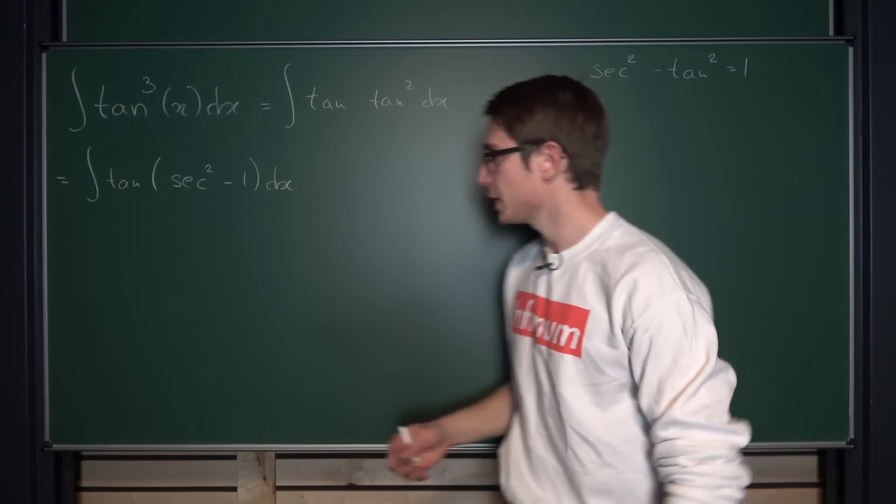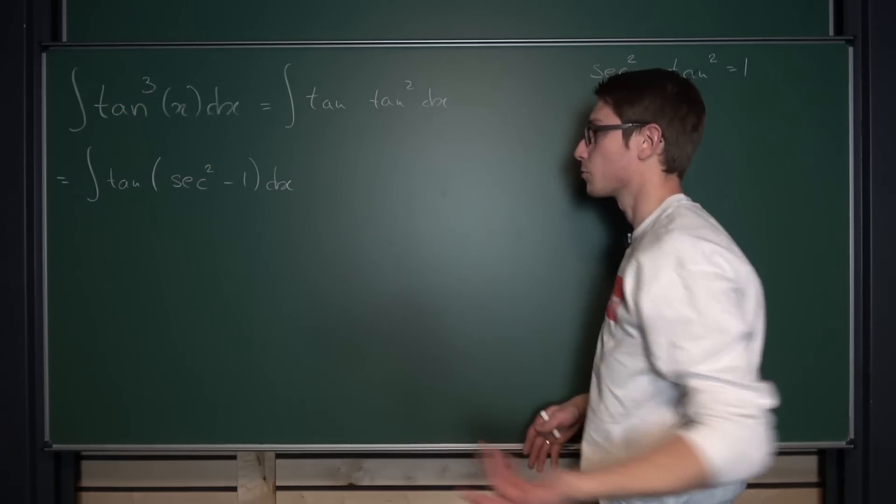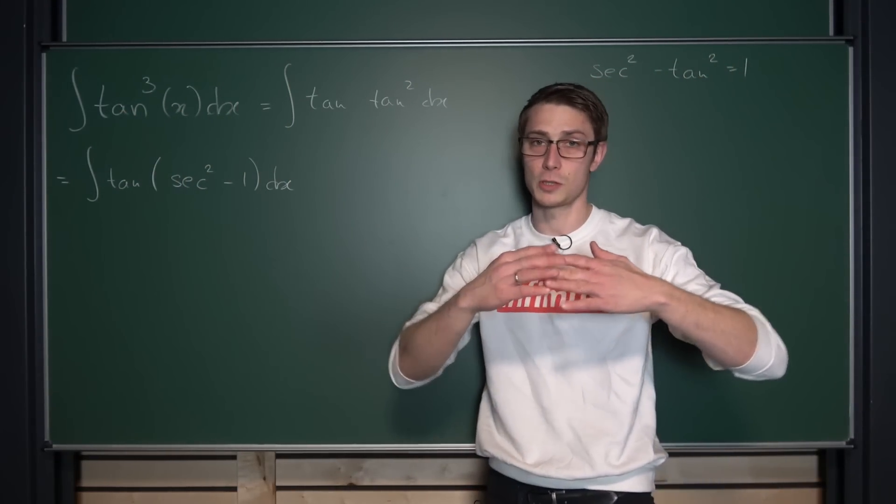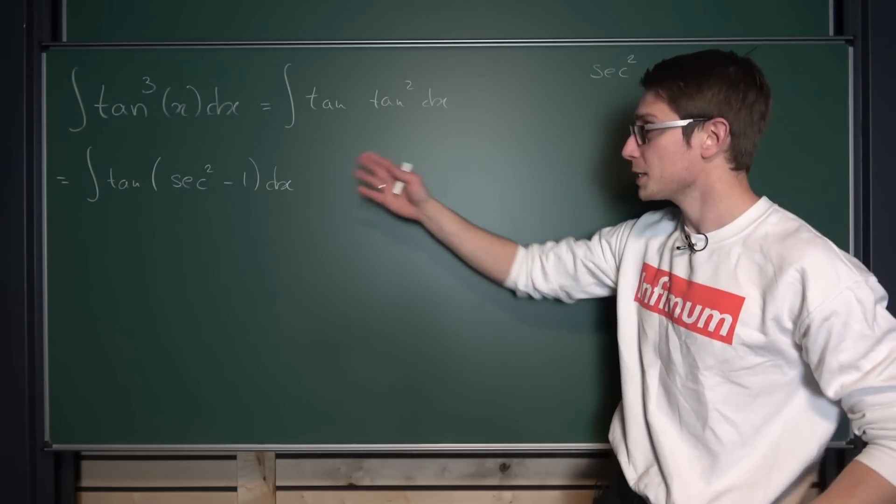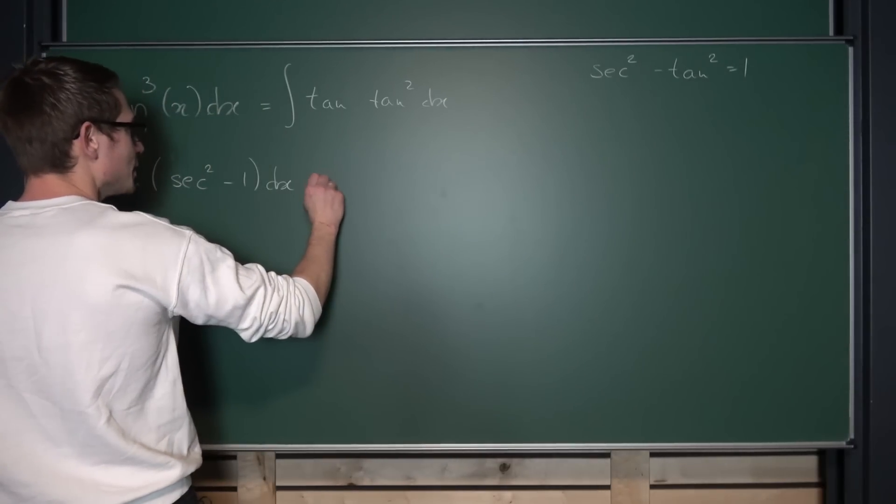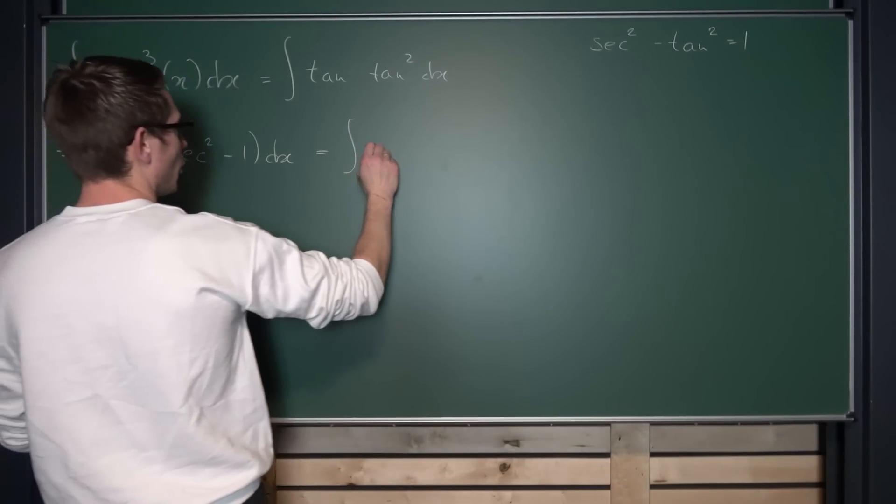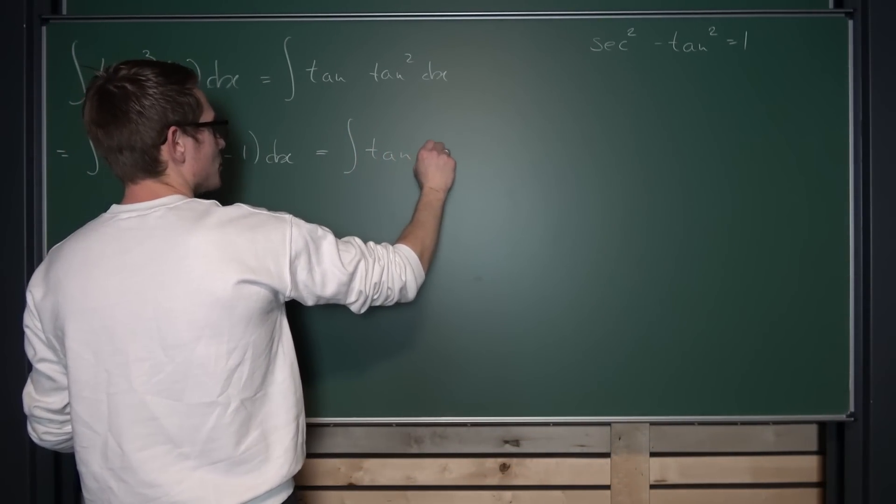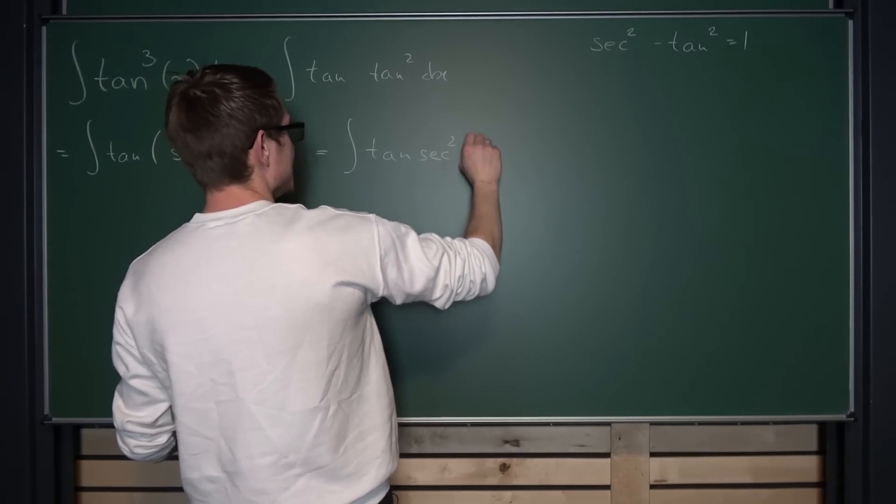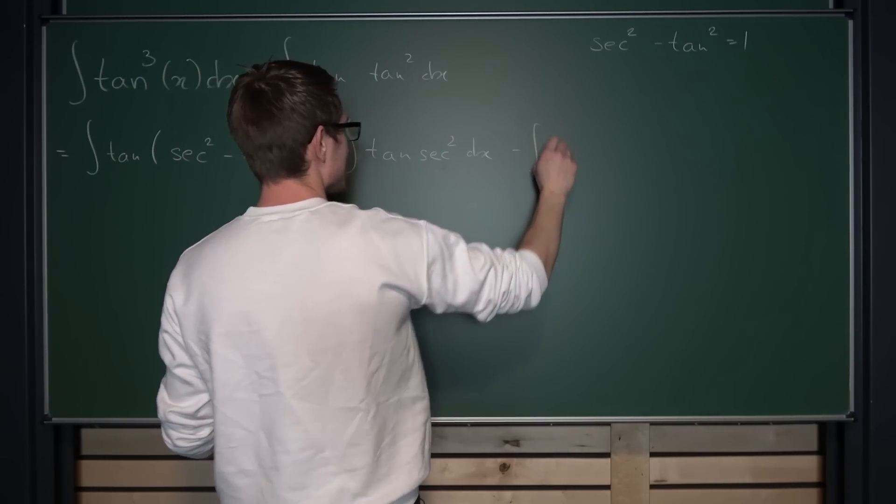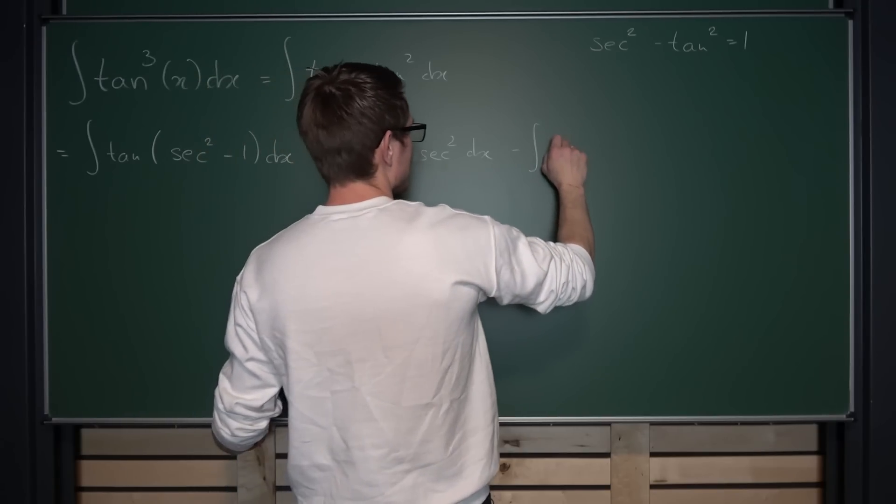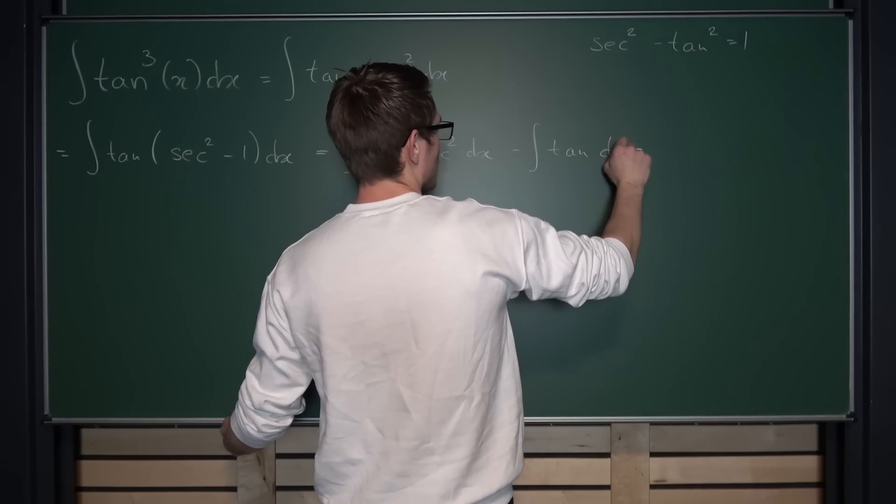And now the cool thing about that is we can multiply everything out using the distributive property and real numbers, and then we can make use of the linearity of the integral to break this up into the difference of two integrals. Namely, that's going to be the integral of tangent times secant squared dx, and then minus the integral of just tangent integrated with respect to x.